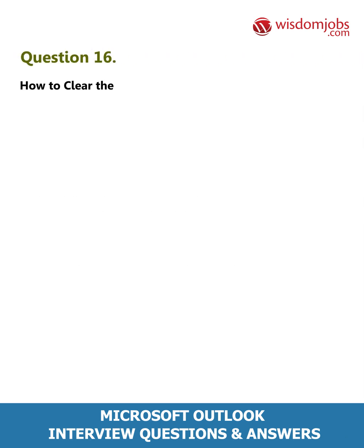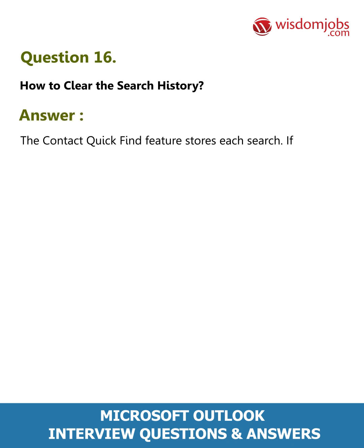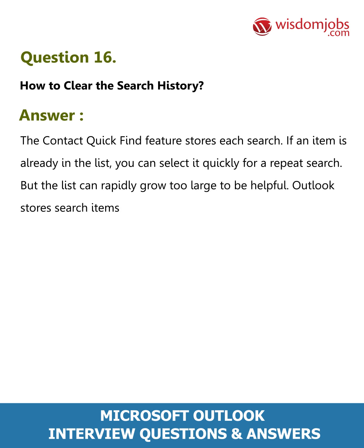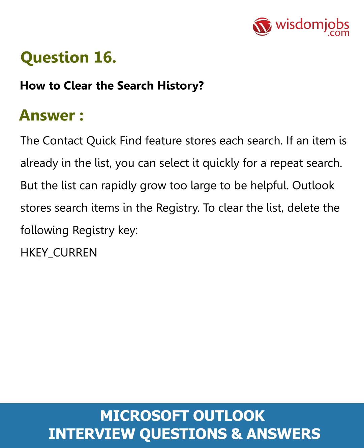Question 16: How to clear the search history. Answer: The Contact Quick Find feature stores each search. If an item is already in the list, you can select it quickly for a repeat search, but the list can rapidly grow too large to be helpful. Outlook stores search items in the registry. To clear the list, delete the following registry key: Software > Microsoft > Office > [version] > Outlook > Quick Find.